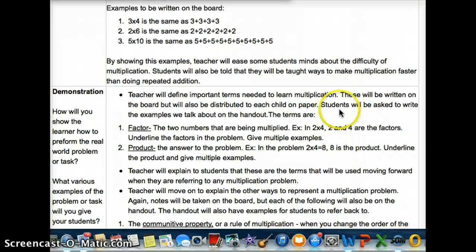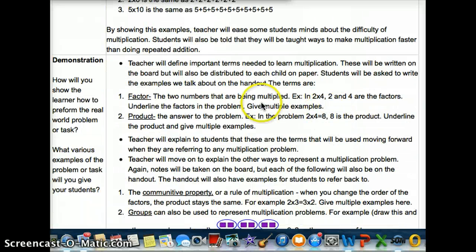First, we need to define important terms in multiplication. The first term we should define is factor, which are the two numbers that are being multiplied. For example, in two times four, two and four are the factors. On the board, underline the factors, and also we should give more than one example. We'll also go on to product, which is the answer to the problem. So for example, in two times four equals eight, eight is the product. Again, I'll have you underline the product and give multiple examples so that they have a better understanding.